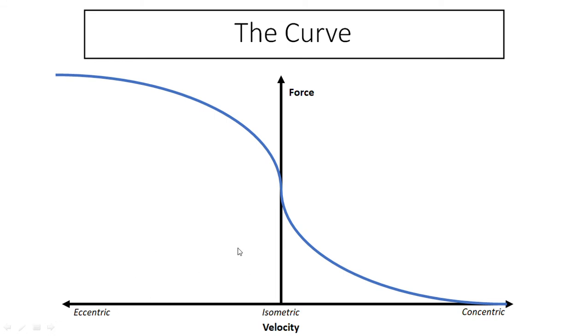If we then move into the eccentric portion, we're talking about this part of the force velocity curve. We can actually produce more force eccentrically than we can concentrically or isometrically. So if we then load our one rep max up another maybe 20% to 30% of what our one rep max is and then we unrack it from the rack, although it's above our one rep max and we're not going to be able to lower ourselves down and come back up, we may still be able to lower ourselves down under control.